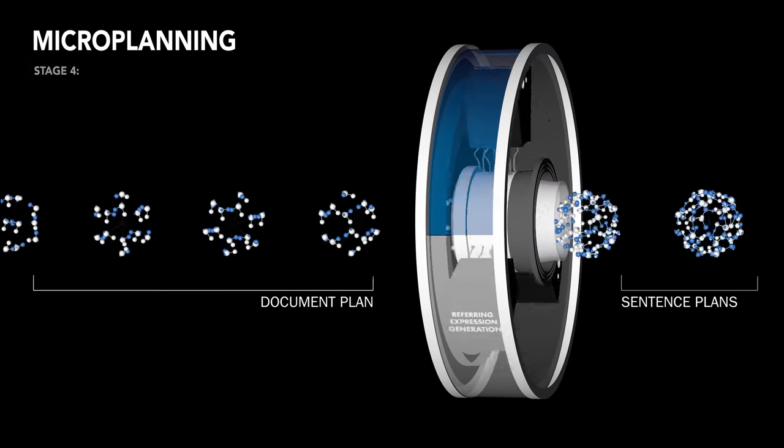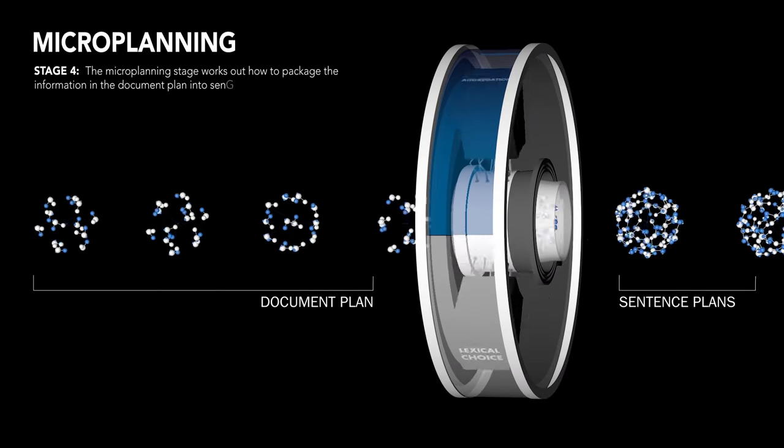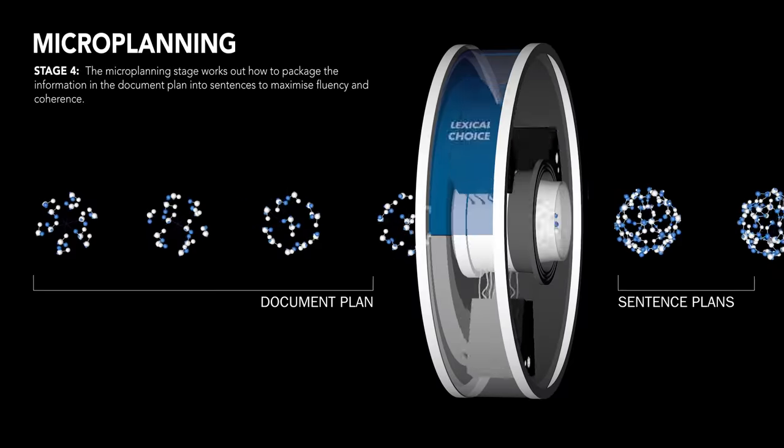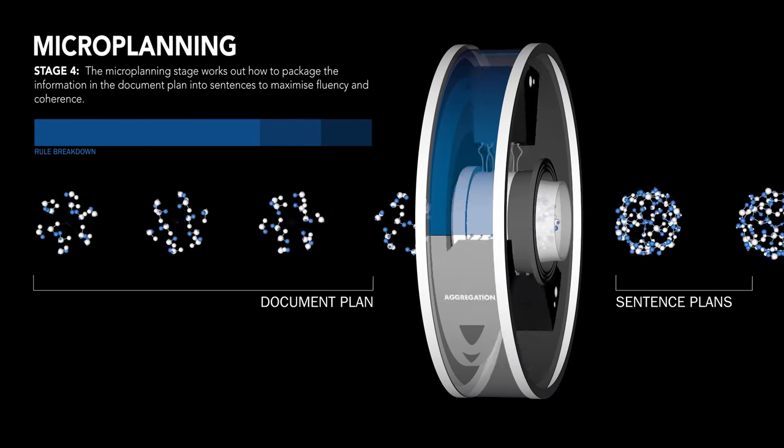Microplanning is about word choice, referring expressions and aggregation. Here the engine is making decisions on how best to express the information contained in the data to the end user, right down to whether it uses long or short sentences.